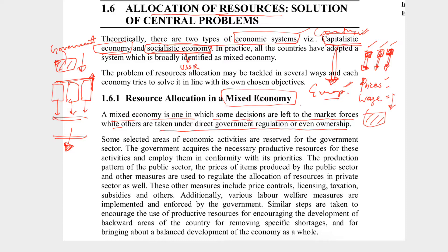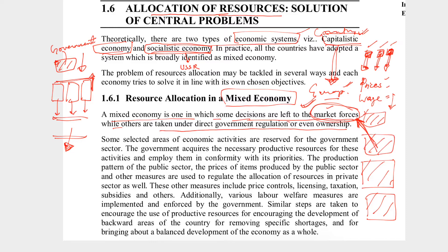In mixed economy, some basic decisions needed by people are handled by the government, while some work is left to market forces — but not completely free. For example, in telecommunications, companies like Reliance, Airtel, Tata, Idea are players and are profit-making, but government regulations exist. They are not free to raise prices as they wish — there is regulation. So in a mixed economy, some work is done by government and some by private players, but under direct government regulations.